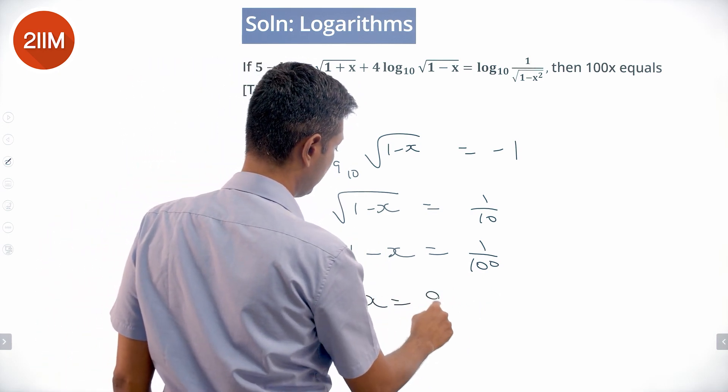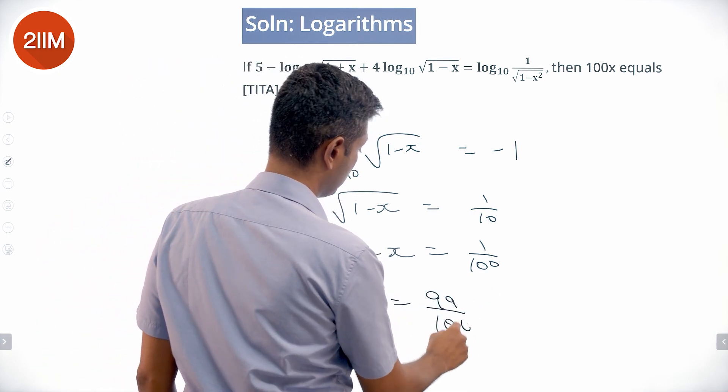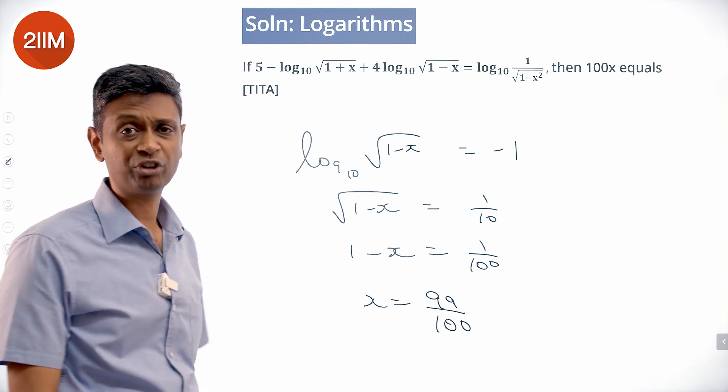x is 99 by 100. We want to find 100x. 100x equals 99.